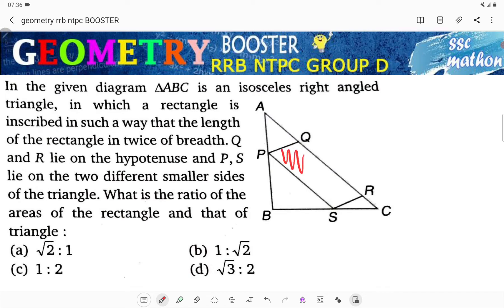This rectangle area to total triangle area is the ratio we need. Now, what is given? AB equals BC, and PQ equals RS equals half of PS. So what do we do?